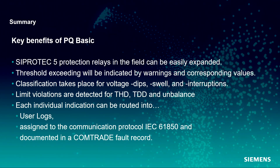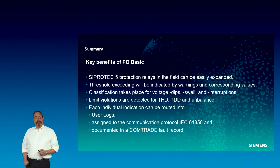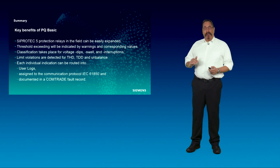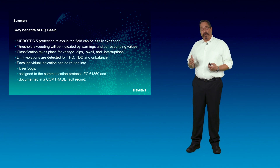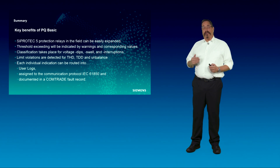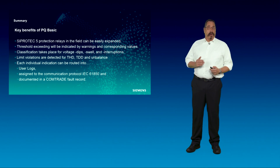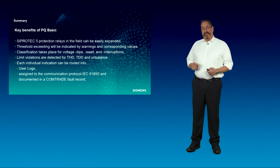Summary: already existing protection relays in the field can be easily equipped with power quality evaluation mechanisms without touching the hardware. Upper and lower limits — so-called thresholds — can be configured to customer needs. Evaluation takes place for events like voltage swells, voltage dips and voltage interruption, as well as total harmonic distortion, total demand distortion and unbalance. Warnings can be routed in the information routing matrix to user logs. The IEC 61850 protocol can transport warnings and extreme values forward to SCADA systems or via SICAM Q-S into the SICAM Q-Analyzer. A warning can initiate a complete record to provide a graphical interpretation of the event. That is the end of our presentation. Thank you for watching.